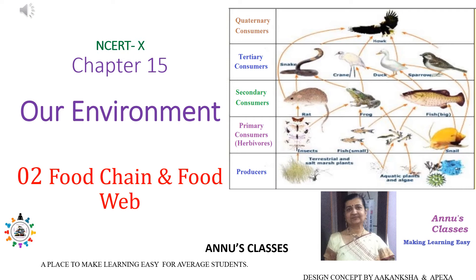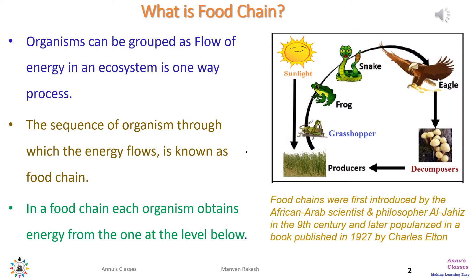Hello students. In this second video for Chapter 15, 'Our Environment', we will learn about food chain and food web. In the ecosystem, the flow of energy starts from the sun, and from there it comes to the vegetation, where the autotrophs produce the energy for the rest of the ecosystem, and then it moves from one organism to another, as can be seen in the figure.